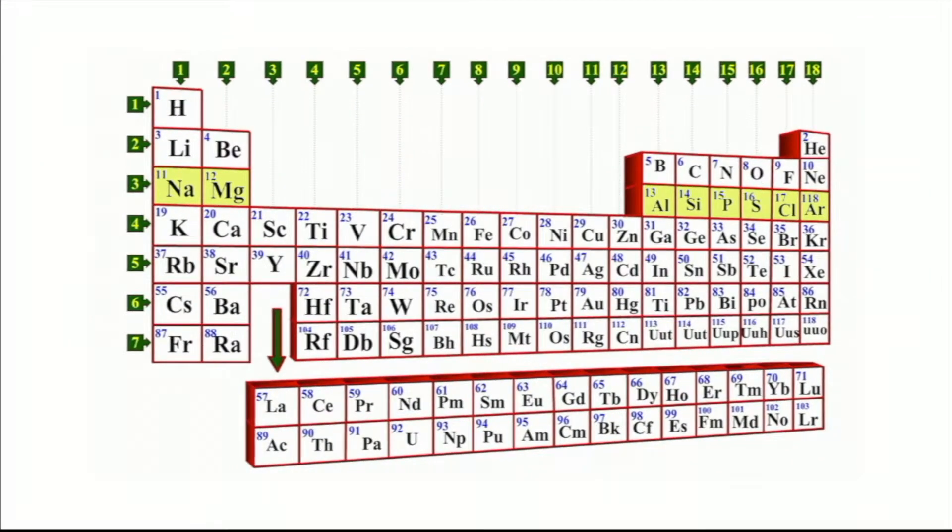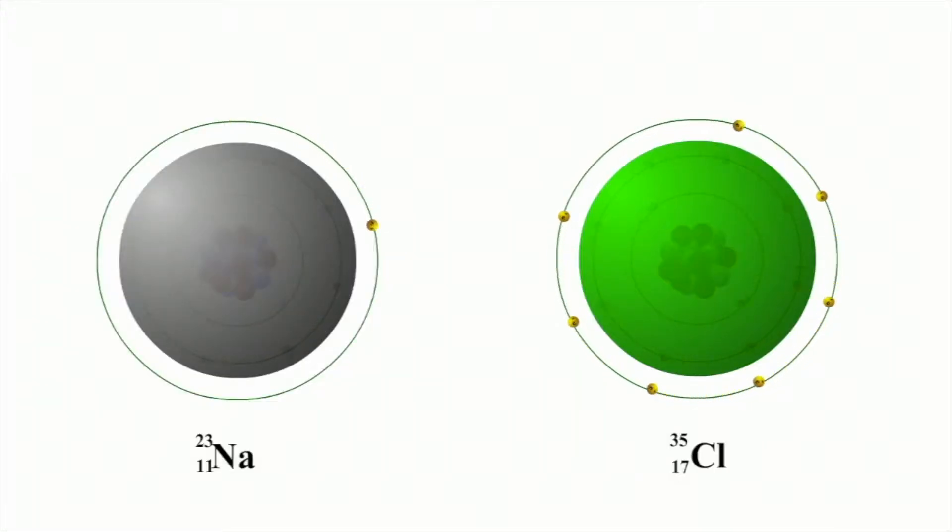Sodium and chlorine, which are in the same period as the noble gas argon, both follow the octet rule. That is, both elements react so they have eight electrons in their outer shell. This is why sodium and chlorine, even though they are highly reactive, react to form a stable ionic compound.